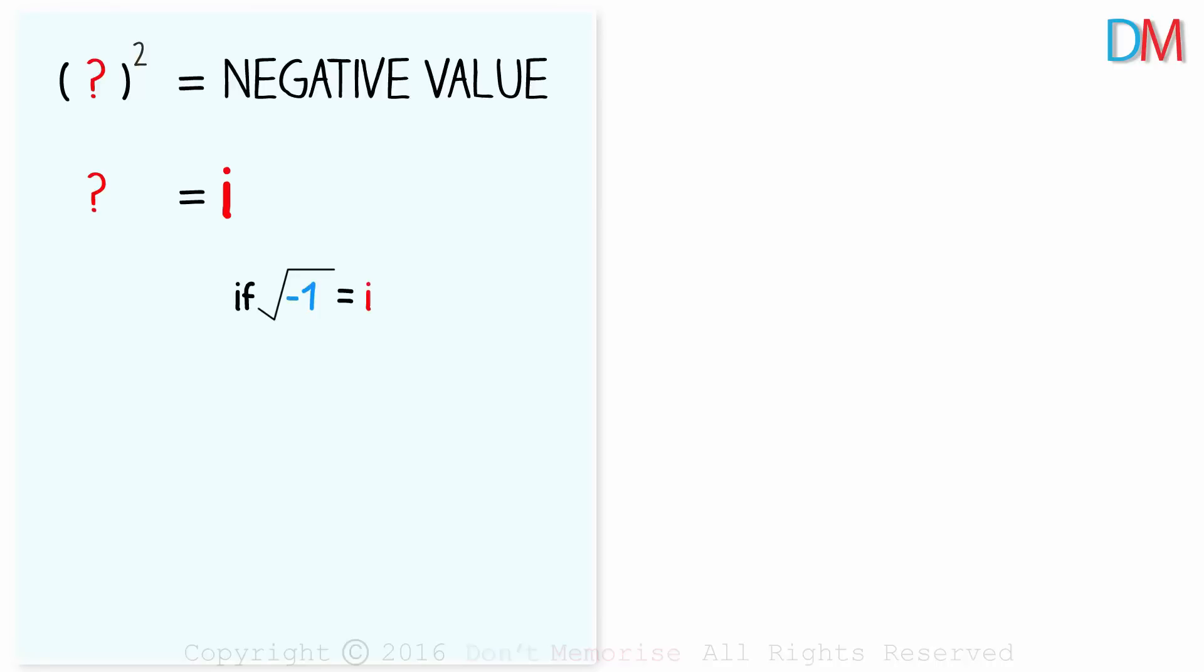If square root of negative 1 is i, what is i times i or i squared? It is root negative 1 times root negative 1. That gives us negative 1. There you go, we got a negative number by squaring a number.